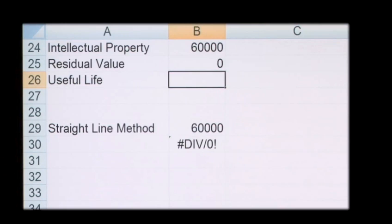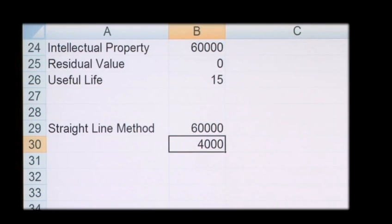Using the straight-line method gives us four thousand pounds a year to be expensed into the income statement.